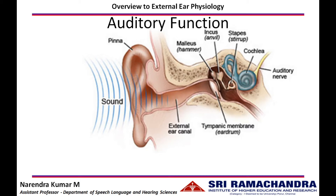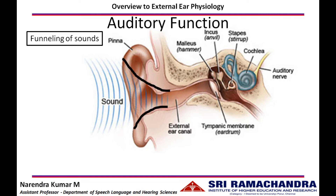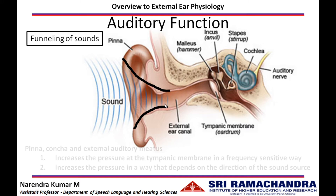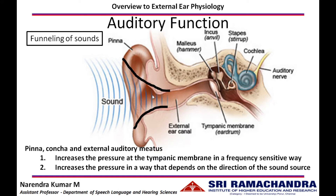Moving on to the auditory function of the external ear: the pinna acts as a funnel, channeling sounds from the environment into the ear canal. By doing so, it collects energy from a larger area and directs it towards the smaller opening of the ear canal. The pinna and concha at the level of the external auditory meatus enhance sound energy at the tympanic membrane in a frequency-sensitive way — certain frequencies are enhanced, and this enhancement is called resonance. The resonance of the pinna varies depending upon the direction of the sound source.